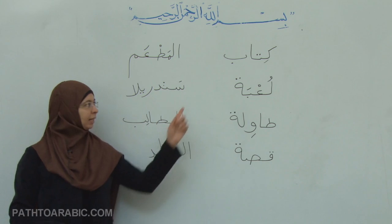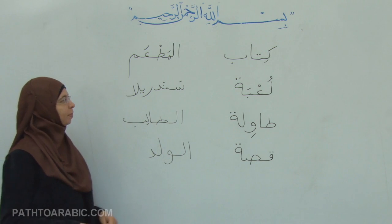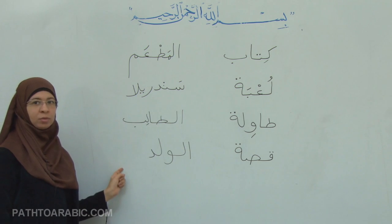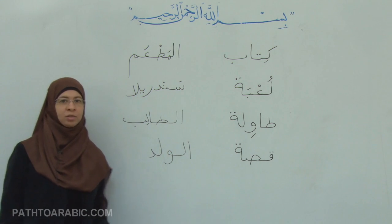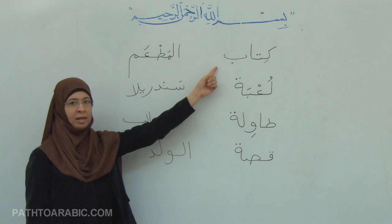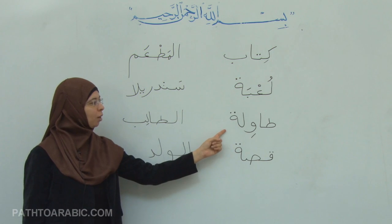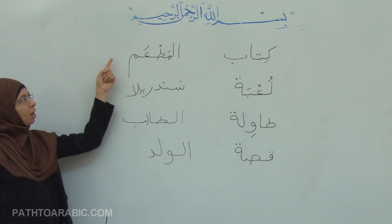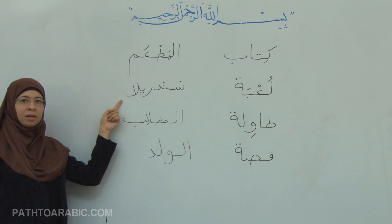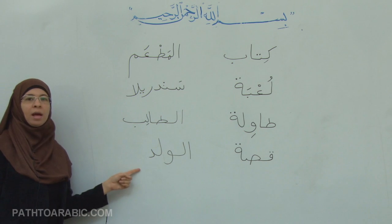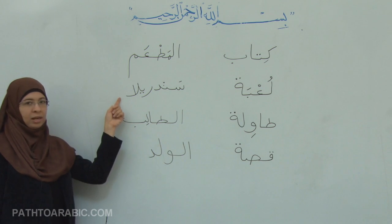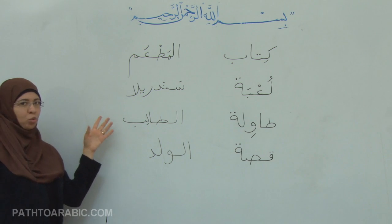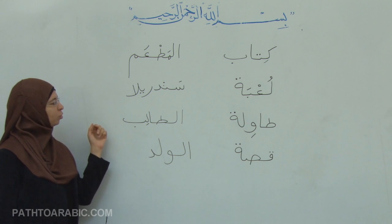Now let's do this exercise together. We have some nouns here and some nouns here, and we should make إضافة. We have كتاب، لعبة، طاولة، قصة on one side, and المطعم، سندريلا، الطالب، الولد on the other. Cinderella is a name — do you know Cinderella? The story of Cinderella is very famous — مشهورة. That's one of our new vocabulary words.